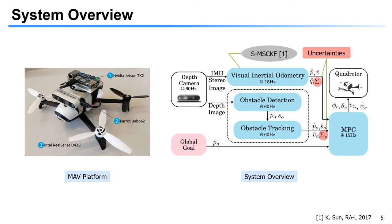We built a testing platform using the Parrot Bebop2 quadrotor, mounted with an NVIDIA Jetson TX2 computing board and an Intel RealSense camera, as shown in the left figure here. The right figure illustrates an overview of our proposed system, which has three main components.